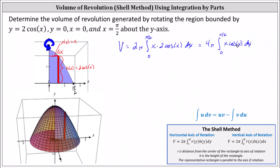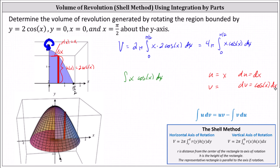To find the antiderivative, we'll have to use integration by parts, so let's consider the indefinite integral to determine the antiderivative of x times cosine x dx. Recall the integration by parts formula is the integral of u dv equals uv minus the integral of v du. Using integration by parts, we will let u equal x, and therefore dv equals cosine x dx. If u equals x, then du equals dx, and v equals the integral of cosine x dx, which is sine x.